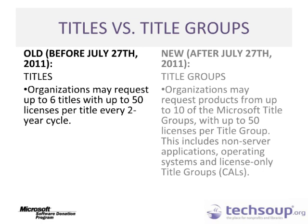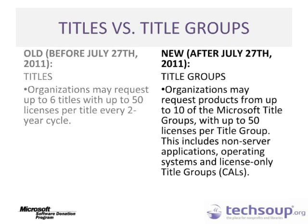Prior to July 27, 2011, organizations could request up to six titles with up to 50 licenses per title every two-year cycle. As a result of the program updates, after July 27, 2011, organizations may request products from up to 10 of the Microsoft Title Groups with up to 50 licenses per Title Group.